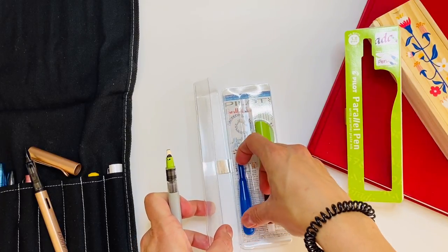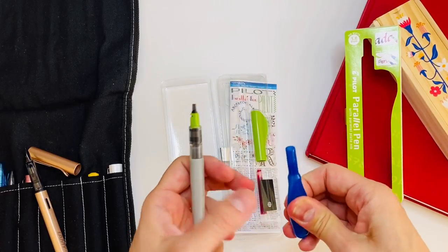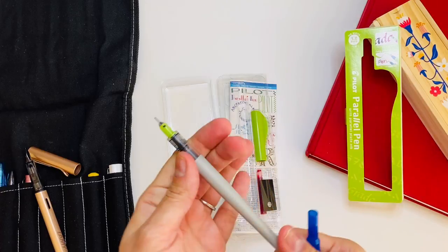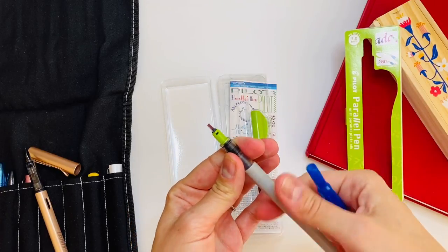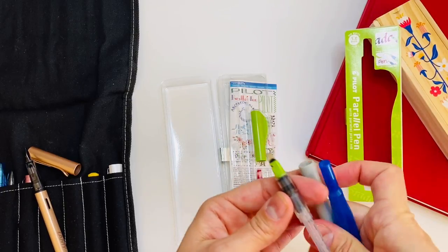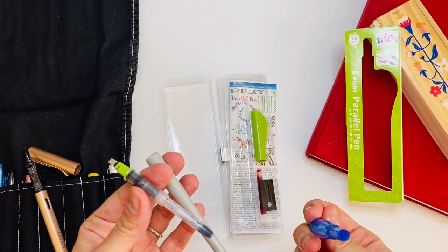It also brings a little pump thing where you can put water in here and kind of flush the pen. So if you're changing the color of the cartridge, you can take it out, fill this with water, put it in here and flush the pen with it. I thought that was really cool.